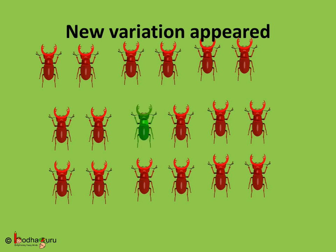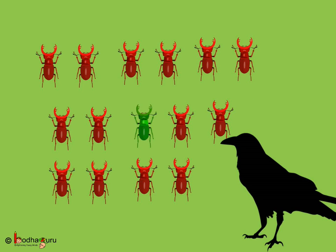the case of green beetles was the one where suddenly a new variation of green beetle appeared amongst the red ones during sexual reproduction. And because of the green colour, the beetle could easily hide in green bushes and had higher chances of survival compared to the red ones,